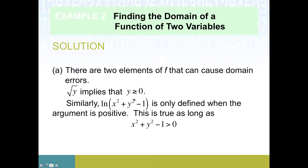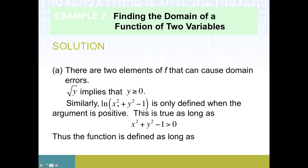The second thing that could go wrong is that some combination of x's and y's makes the inside of this logarithm either zero or negative. We need to make sure that argument is positive, so x squared plus y squared minus one should stay bigger than zero. Both of these conditions need to be true in order to get a real number out, so the function is defined as long as both y is greater than or equal to zero and that other condition holds.